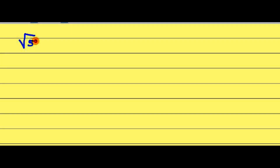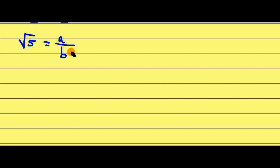Hello friends, today we are going to prove that √5 is an irrational number. First we have to consider that √5 is not an irrational number. So therefore √5 refers to a upon b, where a and b are two co-prime numbers — that means they do not have any factors common between them.